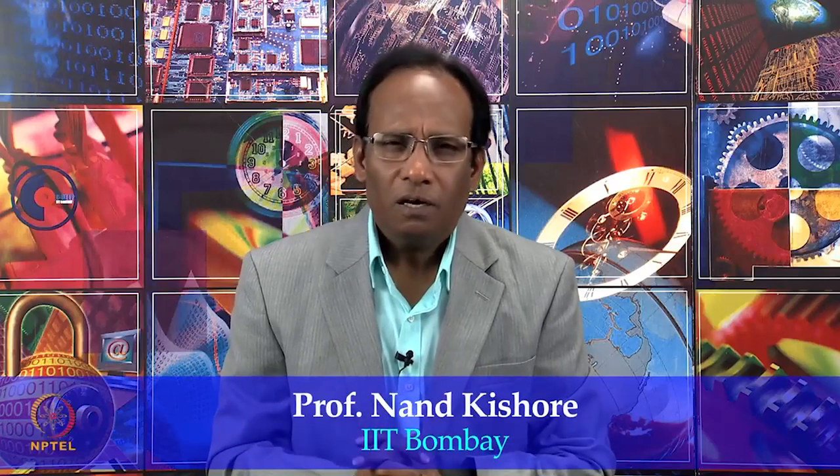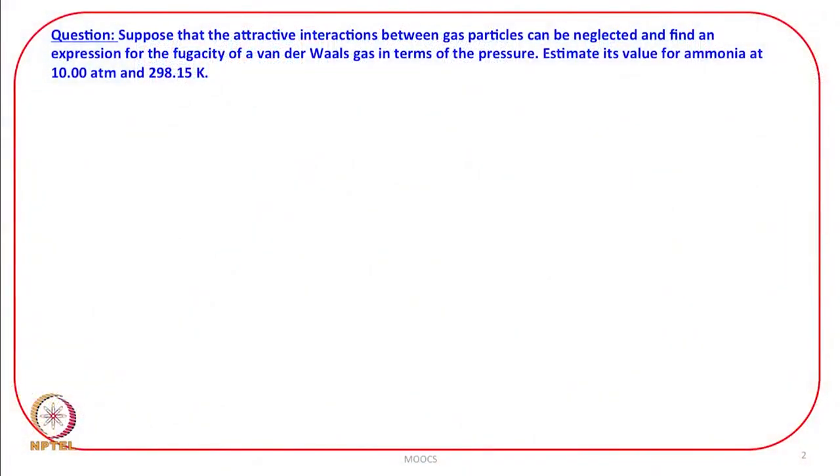We have now discussed a lot about the Gibbs energy, Helmholtz energy, entropy, as well as deviations from ideality, at least in terms of fugacity. Just in the previous lecture, we developed an equation for the fugacity coefficient for a real gas.